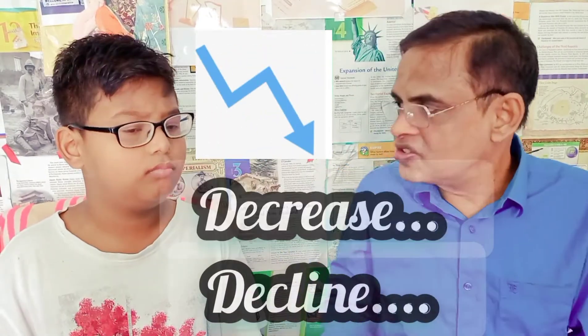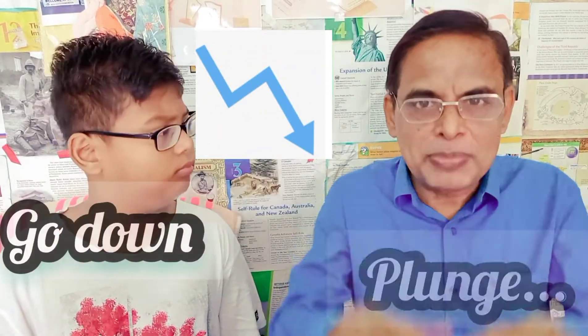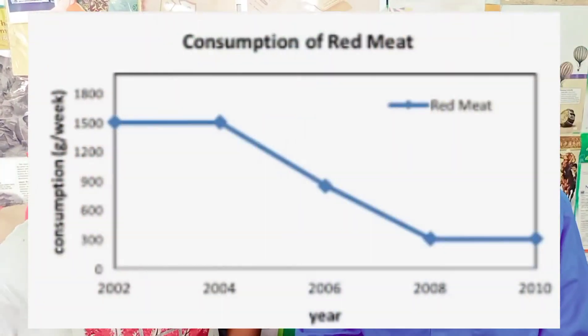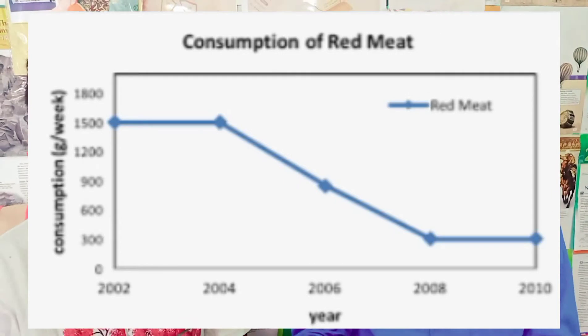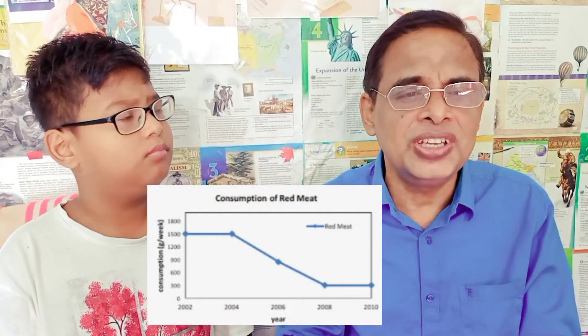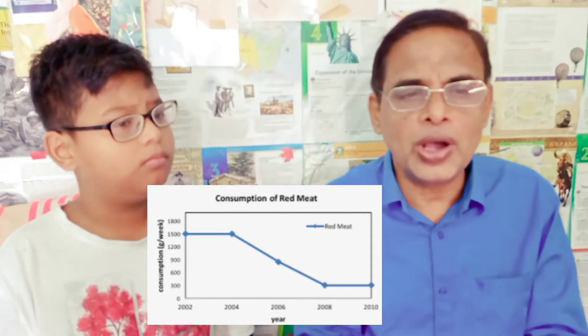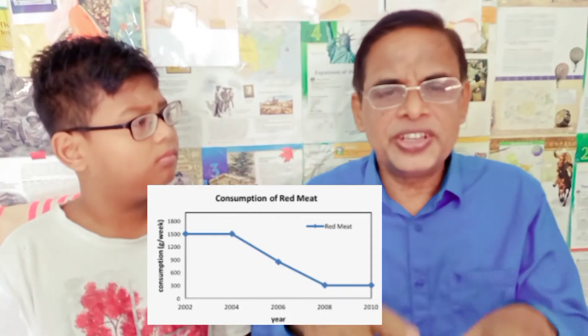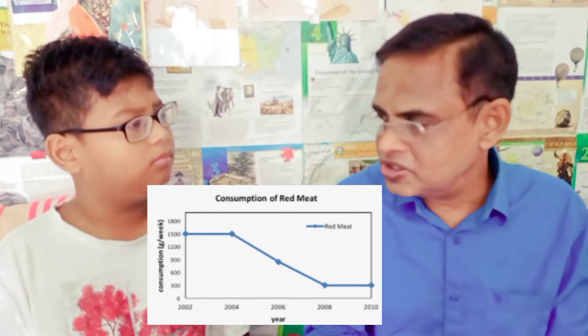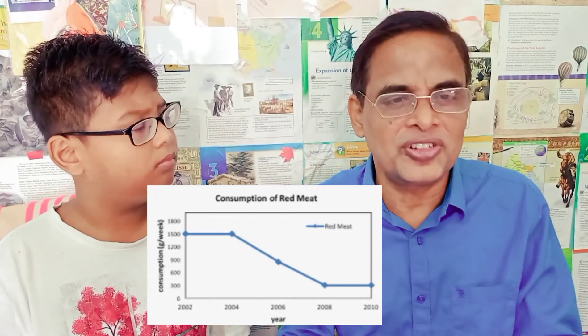Now, the different verbs to describe the fall: drop, decline, decrease, go down, plunge, or plummet. For example, 'the consumption of red meat fell or decreased.' Or we can say 'the consumption of red meat remained stable or steady between 2002 and 2004, then it dropped or declined sharply' — you can say sharply, significantly, or dramatically — 'to its lowest point at 100.' And that's all for today. See ya!